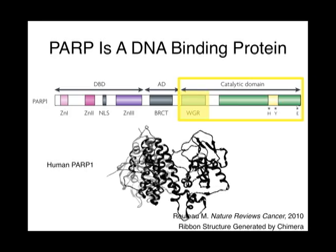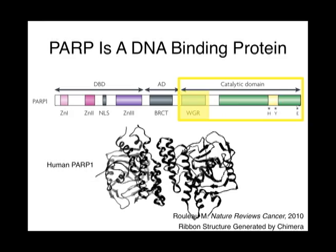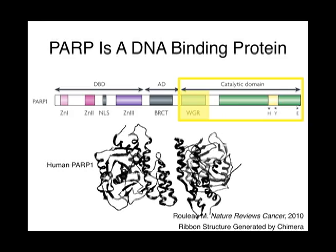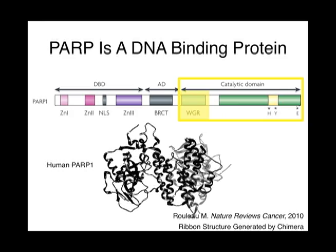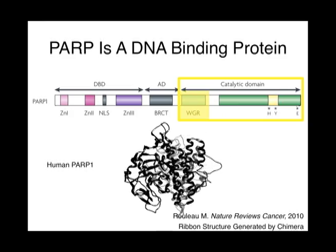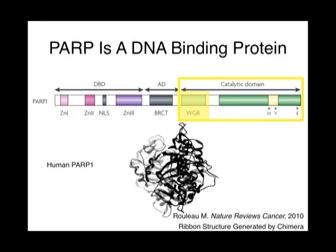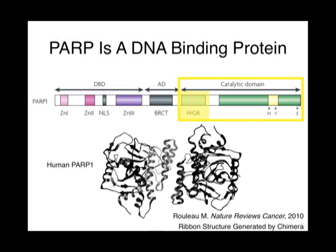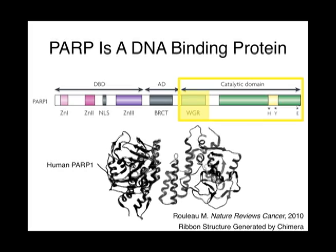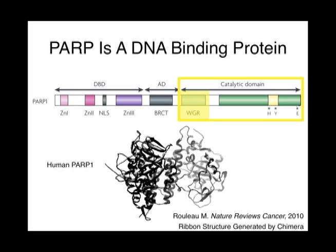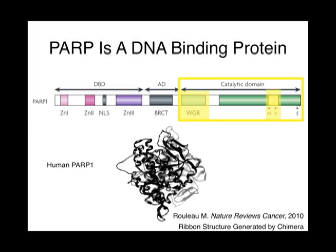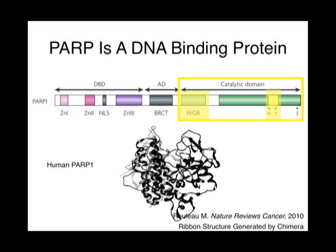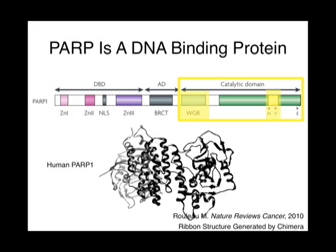Within this domain, there is a WGR — tryptophan, glycine, and arginine — motif, which serves to activate the enzymatic activity of the catalytic region. The catalytic domain also contains highly conserved histidine and tyrosine residues, which are necessary for NAD+ binding.